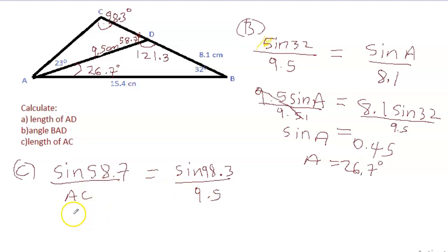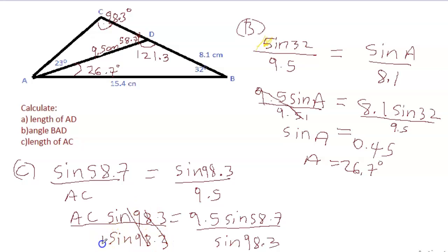Then we can do some transposing here. So AC times sine - I multiply both sides by AC - so AC sine 98.3 is equal to 9.5 sine 58.7. And we want AC, so we can divide both sides by sine 98.3. So sine 98.3 into itself leaves 1, so we end up with AC.